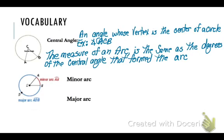The measure of an arc is the same as the degrees of the central angle that form the arc. So the measure of an arc are degrees and it equals the central angle.